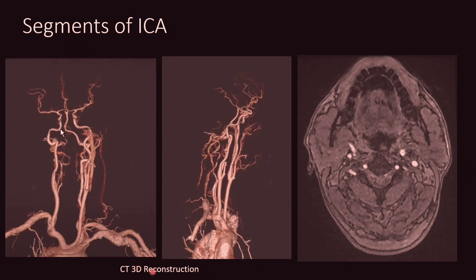Here is a CT 3D reconstruction video showing the right brachiocephalic artery which gives off the right subclavian artery and ascends as a common carotid artery, which then divides into the internal and external carotid arteries. The internal carotid artery includes the C1 or cervical segment, then the petrous segment running in the carotid canal, then ascending as the lacerum segment in the foramen lacerum, going anteriorly in the cavernous sinus, and taking a loop around the anterior clinoid process through the clinoid and supra-clinoid segments to the terminating segments.